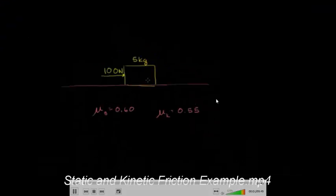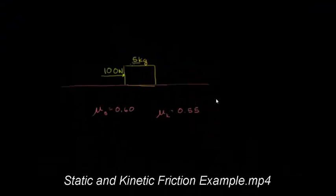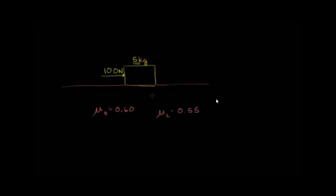So I've got this block of wood here that has a mass of 5 kg, and it's sitting on some dirt. We're near the surface of the Earth. The coefficient of static friction between this type of wood and this type of dirt is 0.60, and the coefficient of kinetic friction between this type of wood and this type of dirt is 0.55 — measured previously or found in a reference book. Let's say we push on this side of the block with a force of 100 Newtons.